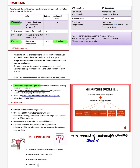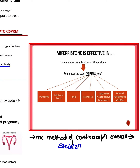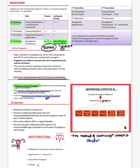Fourth-generation progestogens are most potent and anti-androgenic — won't cause acne. Drug: Yasmin. Selective progesterone receptor modulators: mifepristone and ulipristal. Mifepristone has androgen receptor blocking and glucocorticoid activity. Mnemonic for mifepristone uses: M for meningioma, I for induction of abortion, F for fibroid, E for endometriosis, P for progesterone receptor-positive breast cancer, R for raised steroid (Cushing syndrome treatment). Most common method of contraception overall is sterilization.